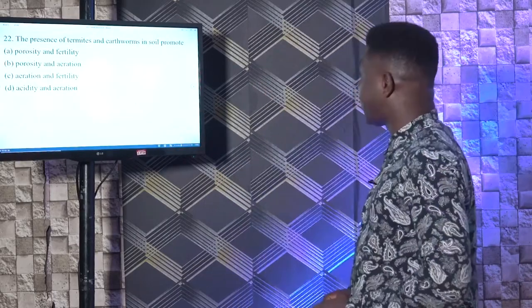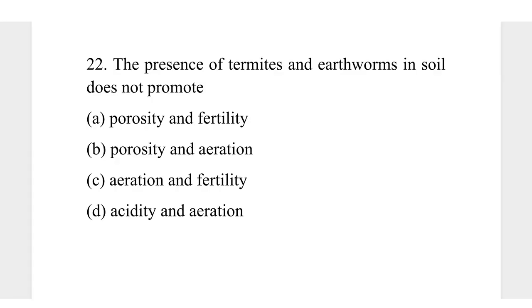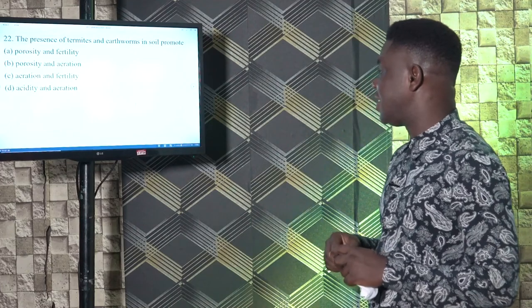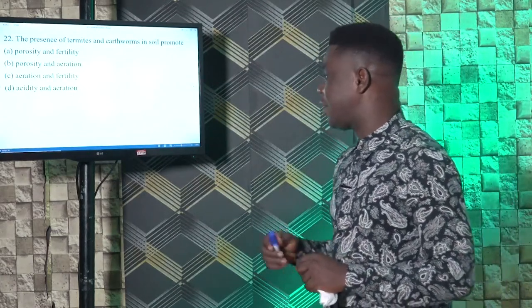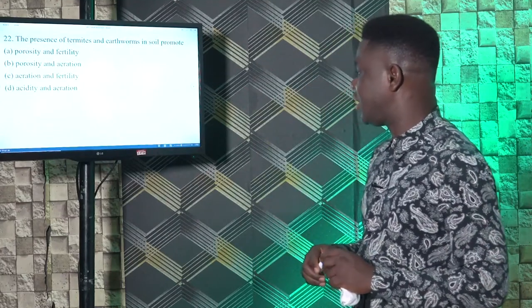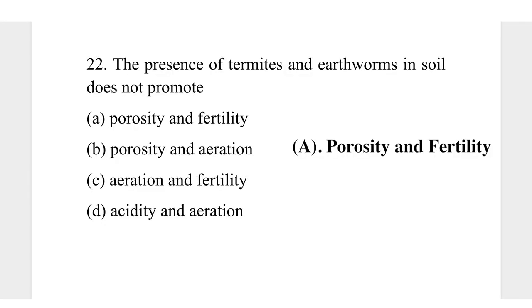Question 22. The presence of termite and earthworm in soil promotes: A, porosity and fertility; B, porosity and aeration; C, aeration and fertility; D, acidity and aeration. The presence of termite and earthworm promotes porosity and fertility. The earthworm will help break down the soil particles, thereby promoting porosity. The termite helps in improving the decomposition of organic materials, thereby improving the fertility of the soil. The correct answer is A, porosity and fertility.